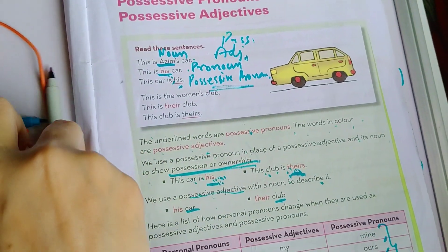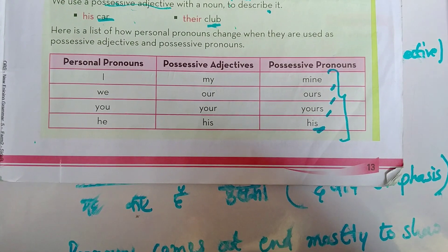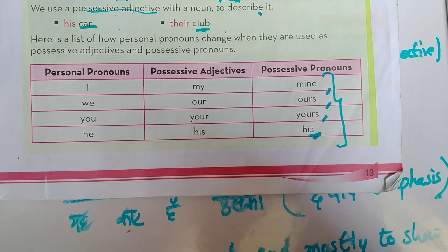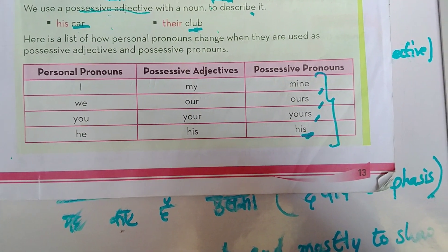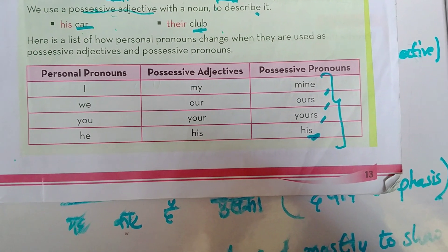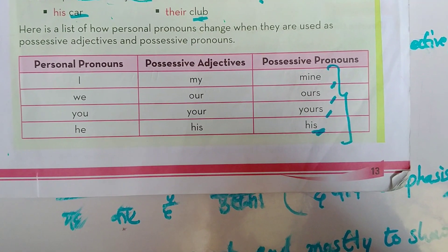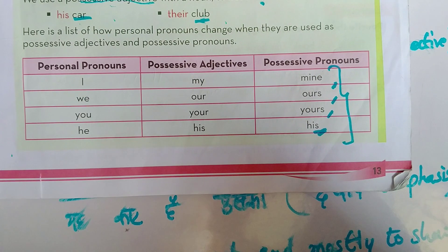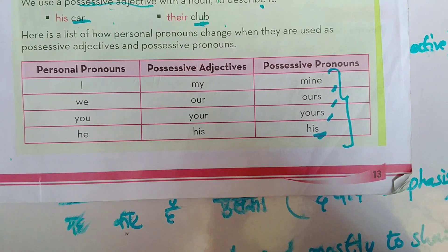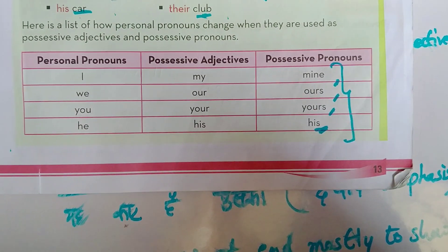This is your table. These are your personal pronouns - I, we, you, he, she, they, it. Now when personal pronouns change to possessive adjectives, then the changes are: I becomes my, we becomes our, you becomes your, he becomes his. And when it goes to possessive pronoun, so mine, ours, yours, his. This is the way. You can just note it down in your copies also.